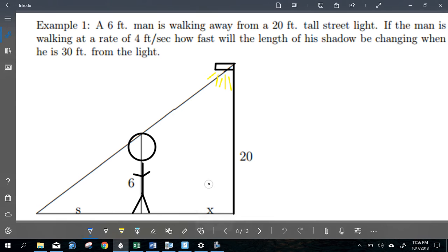Okay, so for the next one, a 6-foot man is walking away from a 20-foot tall street light. So this is my guy. Here's my lamp. He's walking that way, walking away. If the man is walking at a rate of 4 feet per second, how fast will the length of his shadow be changing when he is 30 feet from the light?